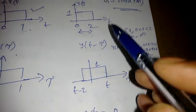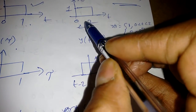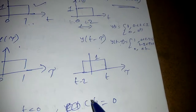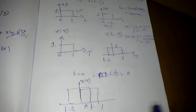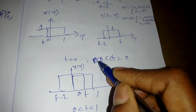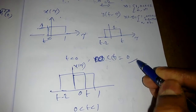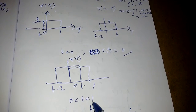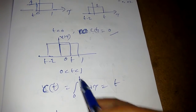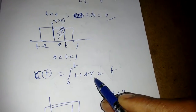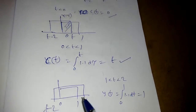The limits for y(t-τ) are t-2 ≤ τ ≤ t. Reversing gives t-2 to t. We proceed case by case: for t < 0, no common region so c(t) = 0. For 0 < t < 1, the common region is 0 to t, giving integral of 1·1 dτ = t.